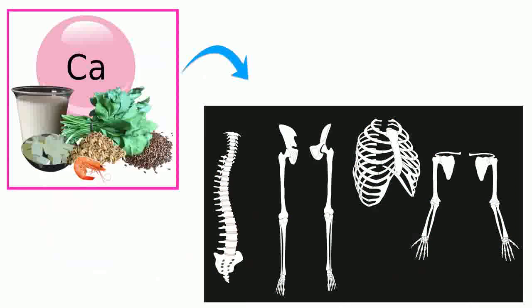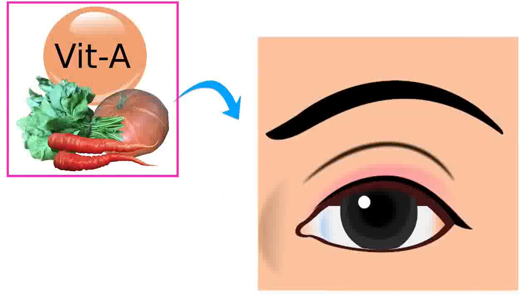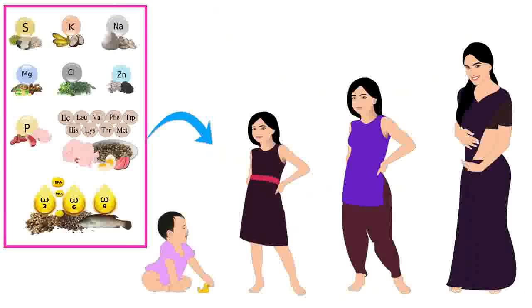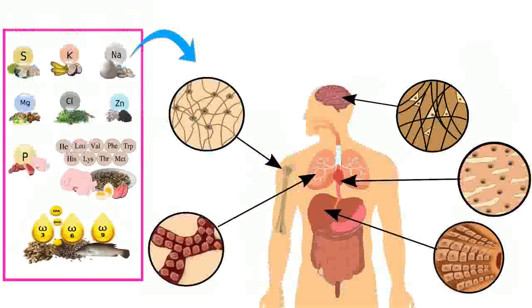Calcium is required for strong bones, and vitamin A is required for healthy eyes. By contrast, type 2 nutrients are required for the overall growth of the body — they form part of the structure and function of each and every cell in the body.